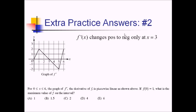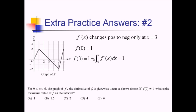Since f prime changes positive to negative only at x equals 3, I don't actually have to test the 5.5 spot — a local min cannot be the max for a whole function. Testing: f of 0 is 1. To find f of 3, I do f of 0 plus the integral from 0 to 3 of f prime, which is 1 plus the area of that triangle: 1 plus (1/2 times base 3 times height 2). The 1/2 and 2 cancel, so this is 1 plus 3, which equals 4.